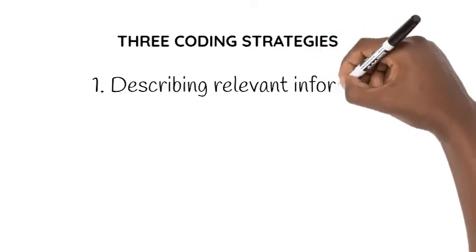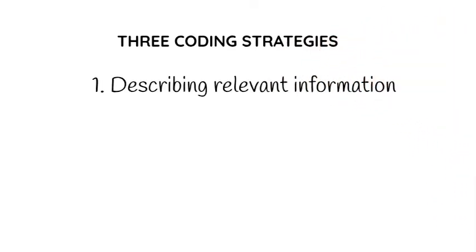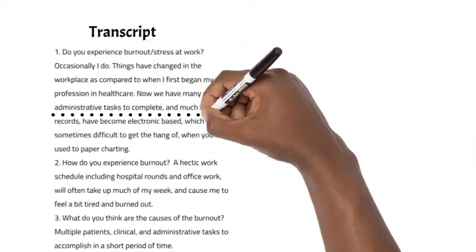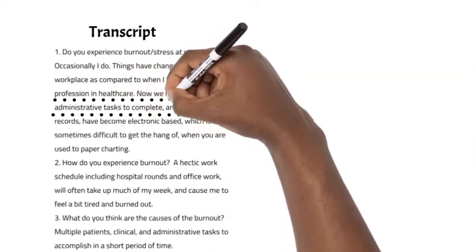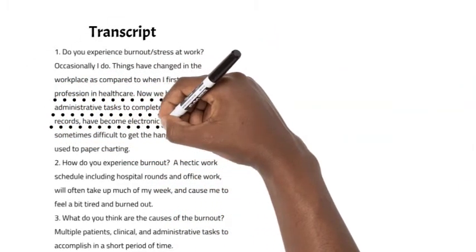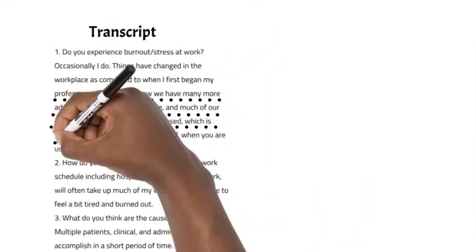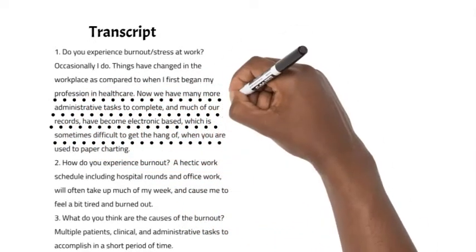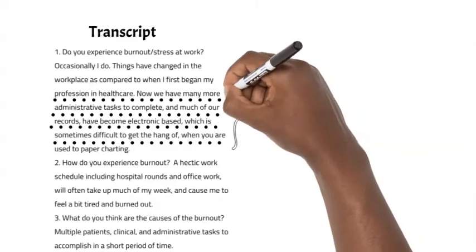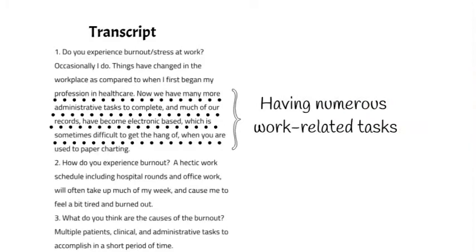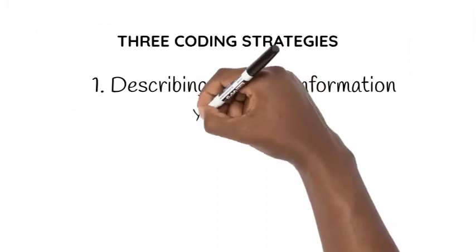The first one is describing. What you're doing is going through participant transcripts, identifying significant information that you think might help you to address your research question, and you just describe what you identify. Based on the description, you come up with a phrase, which could be between two to five words, to represent that significant information.